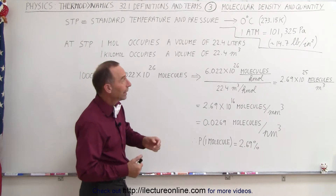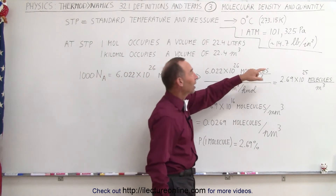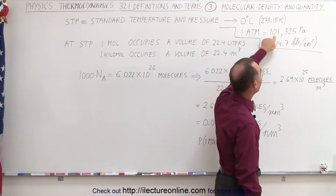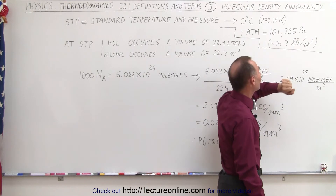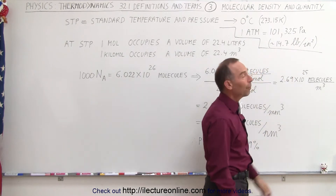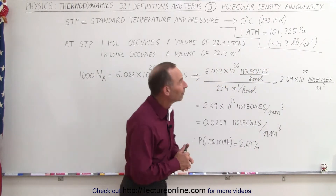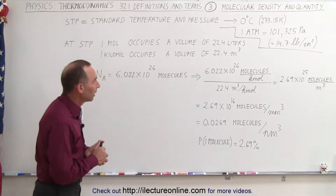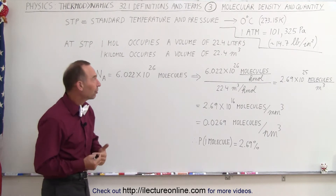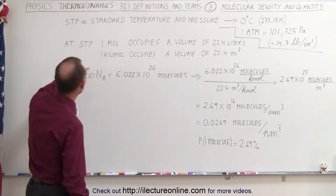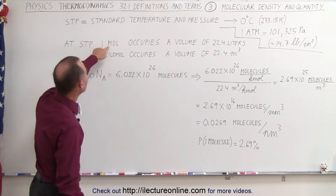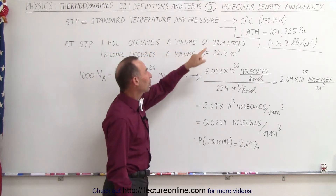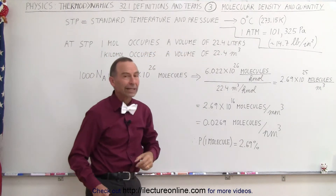One atmosphere in pascals, or in newtons per square meter, is 101,325 — approximately 14.7 pounds per square inch. Now, when we are at atmospheric pressure, we know that one mole of gas occupies a volume of 22.4 liters.